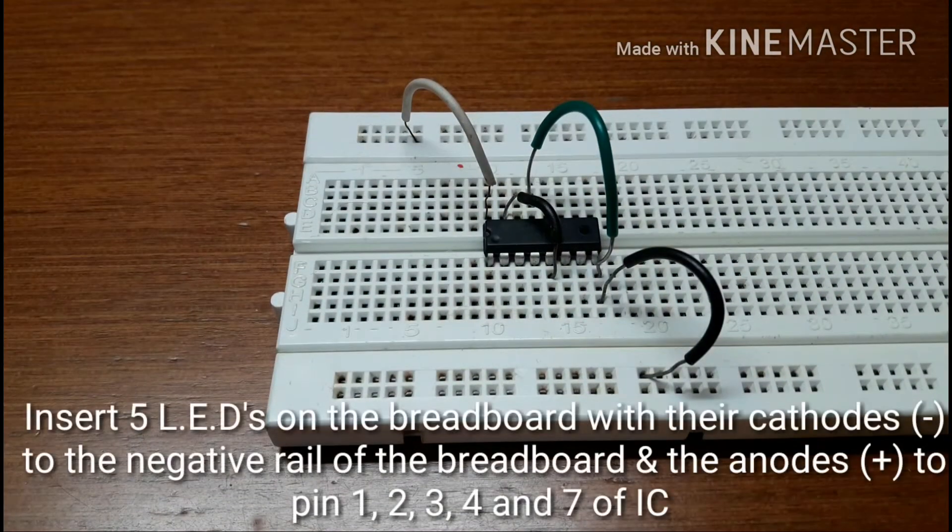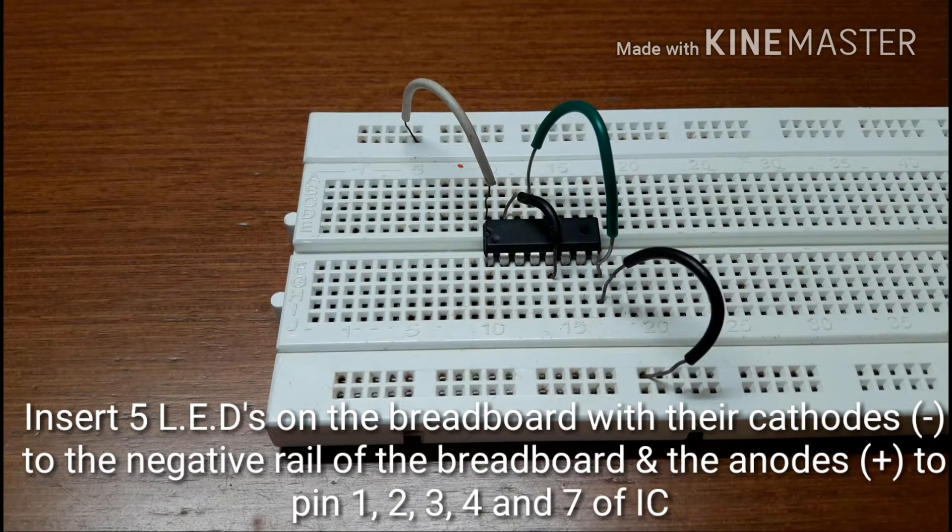Now, insert 5 LEDs on the breadboard with their cathodes connected to the negative rail of the breadboard and their anodes connected to pin 1, pin 2, pin 3, pin 4, and pin 7.